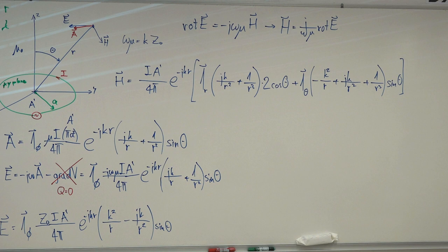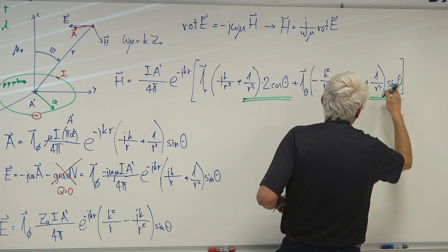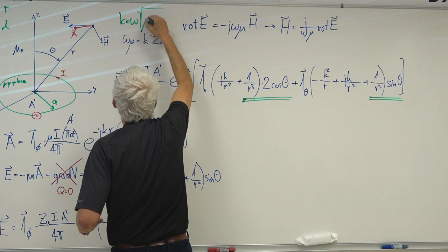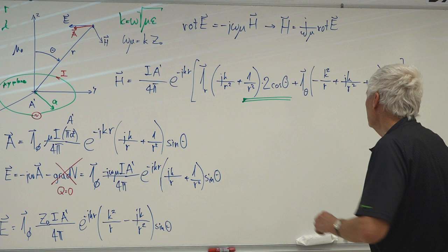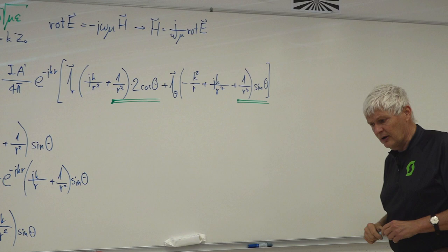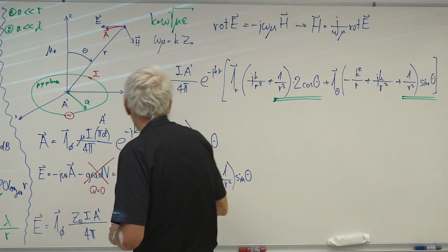The terms with no k are static fields. K contains frequency: k = ω√(με). At frequency zero, all k-dependent terms vanish, leaving only the static terms — the static magnetic dipole field. You likely learned about these three years ago at fundamentals of electrical engineering: a loop with DC current is a static magnetic dipole. These are the static terms.